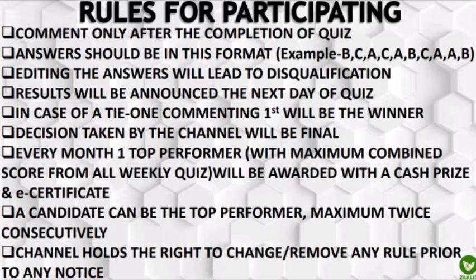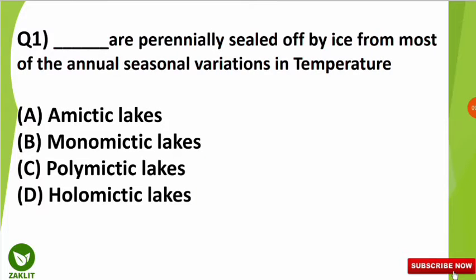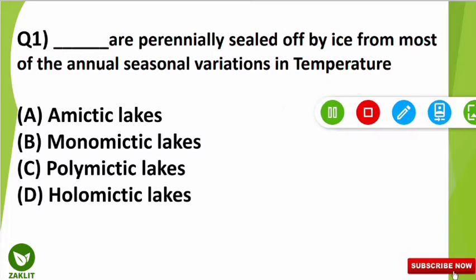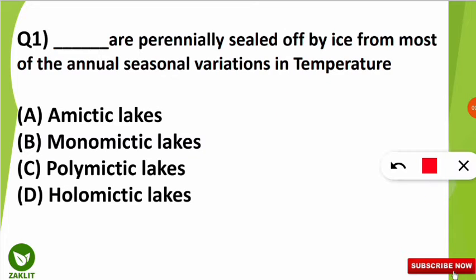Without wasting much time, let's get started. The first question is: dash are the lakes perennially sealed off by ice from most of the annual seasonal variation in temperature. Four kinds of lakes are given, so select the correct option.